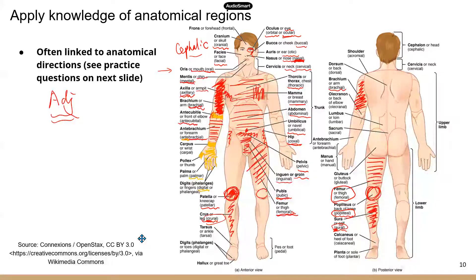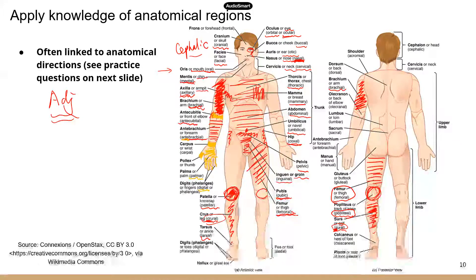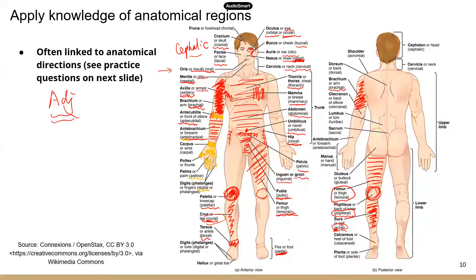The ankle area is tarsal. For the entire foot, it's known as pedal — like pedaling a bicycle with your feet, or pedestrians walking on their feet. We also have digital for all the toes, but we have a special term for the big toe, which is hallux.